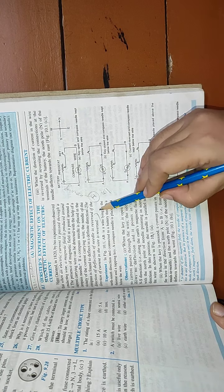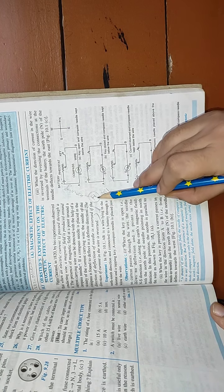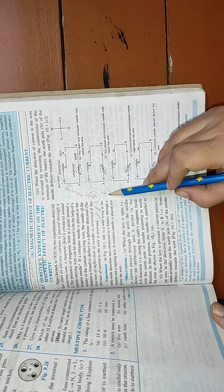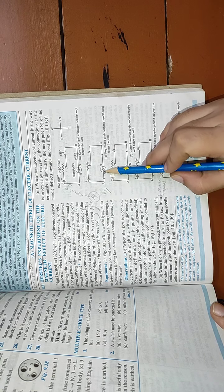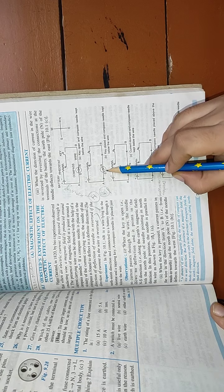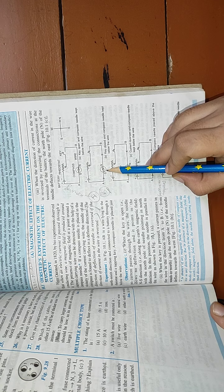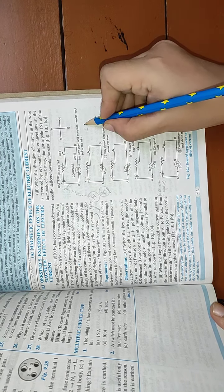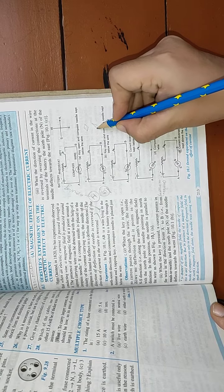And as I have told you that whenever the current will flow, it will produce magnetic field. So because of this magnetic field that is produced, this compass needle is showing the deflection. It is tilted. Earlier it was straight and now it is tilted.